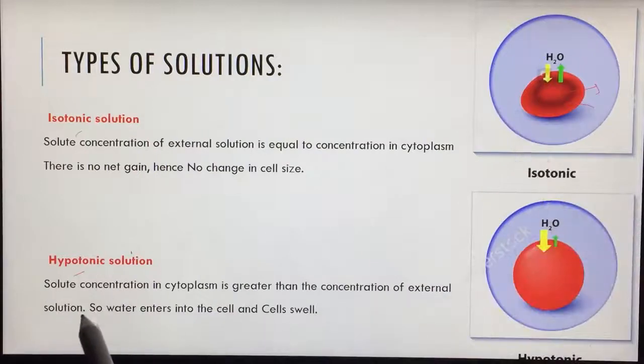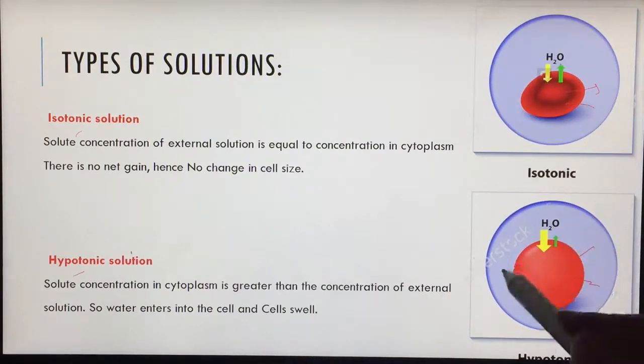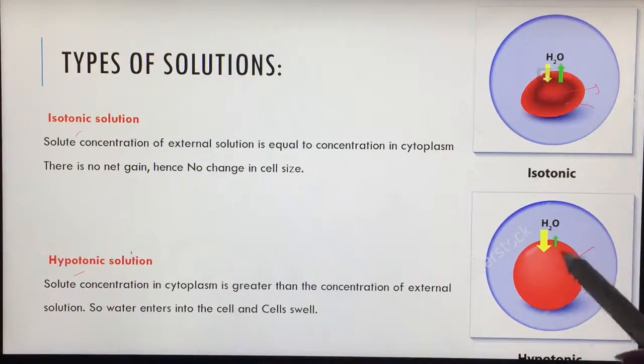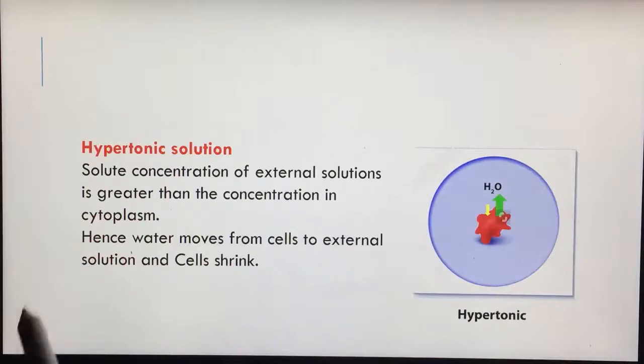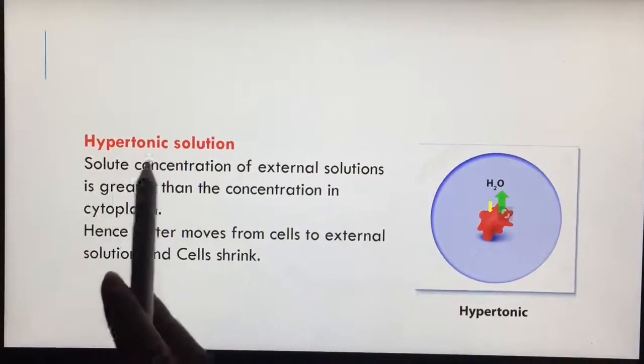For hypotonic solution, the solute concentration in the cytoplasm is greater than the concentration of the external solution. The water molecules would move from outside to inside the cell and more molecules would be moving from outside to inside and less number of molecules would be moving outside. The end result is the cell swells up in the hypotonic solution.